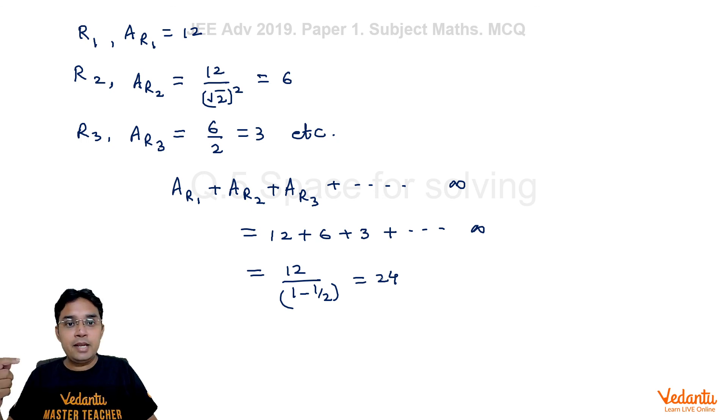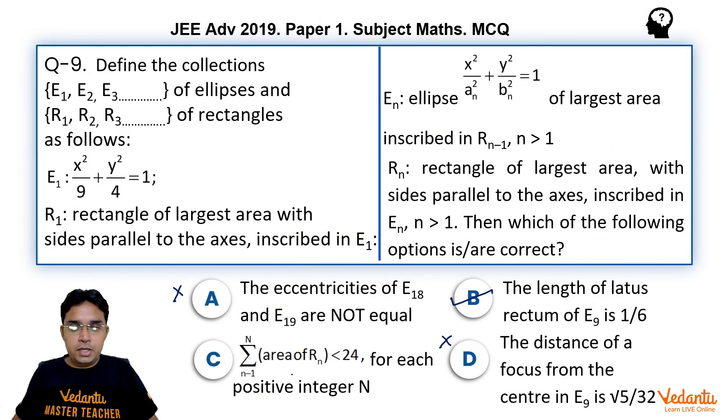Here sum is coming out to be 24 if we take all possible rectangles up to infinite. But if we take n, capital N, to be some finite number, may be very large number but finite number, even then we will not be able to reach this number 24 because it's a limit which calculates all possible rectangles that are going up to infinite. That means what they are saying in this C option, that sum of areas of Rn will be less than 24, is absolutely correct because what I was getting there was the limit and here we are looking for all positive integers.